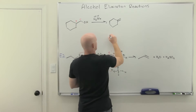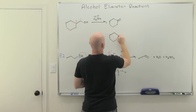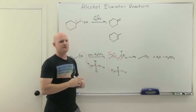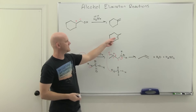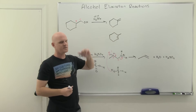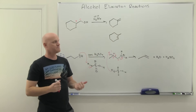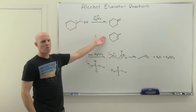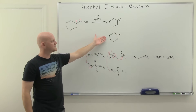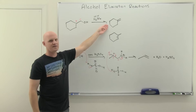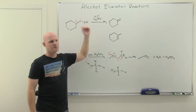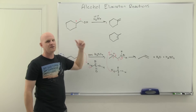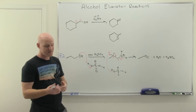Except it's not the only product. The actual major product ends up being a more substituted alkene — whether you draw the double bond in one location or the equivalent position, it's the same thing. The question we have to answer is: why in the world is this the major product? Because this other one doesn't even seem possible — except that it is.